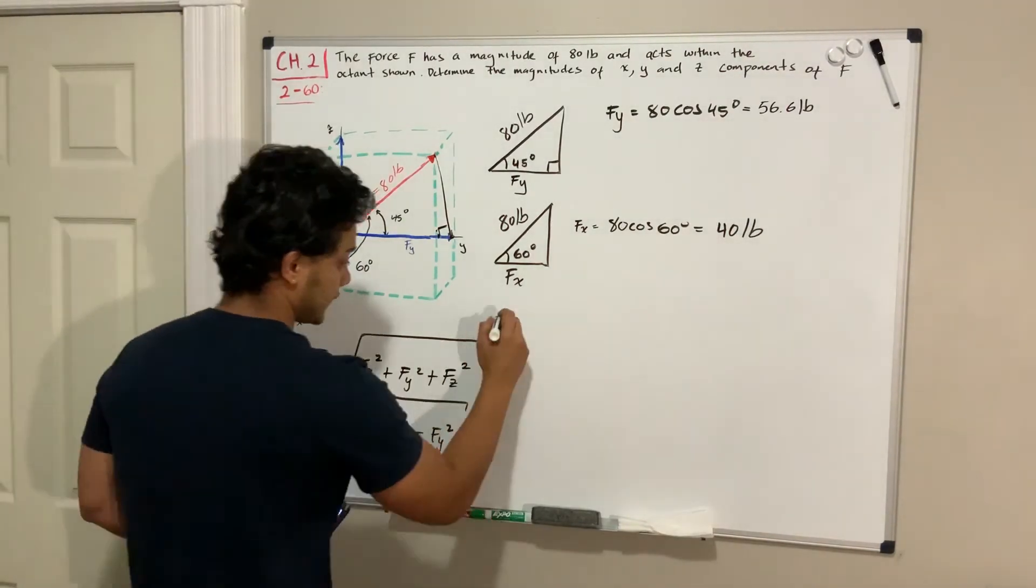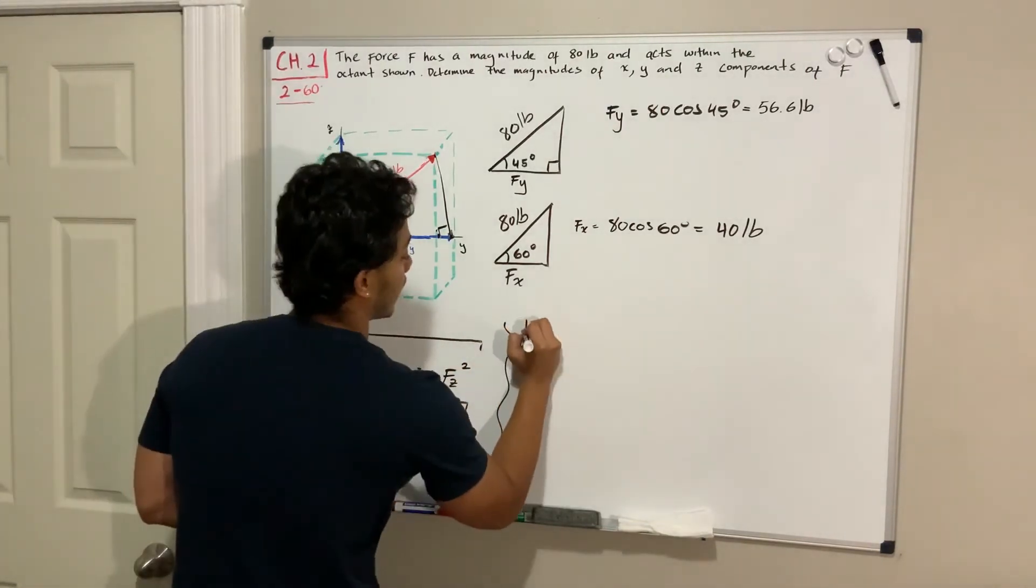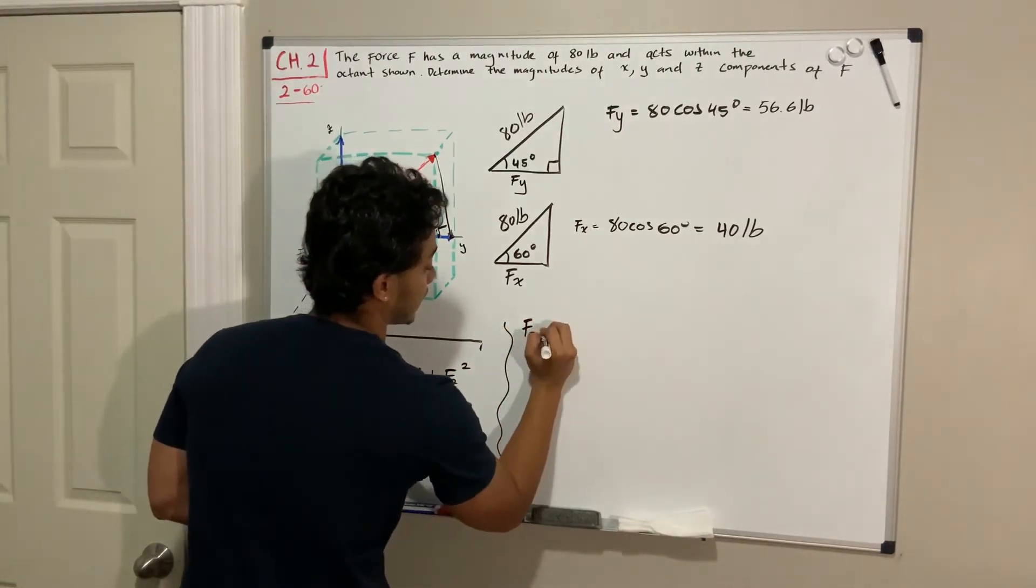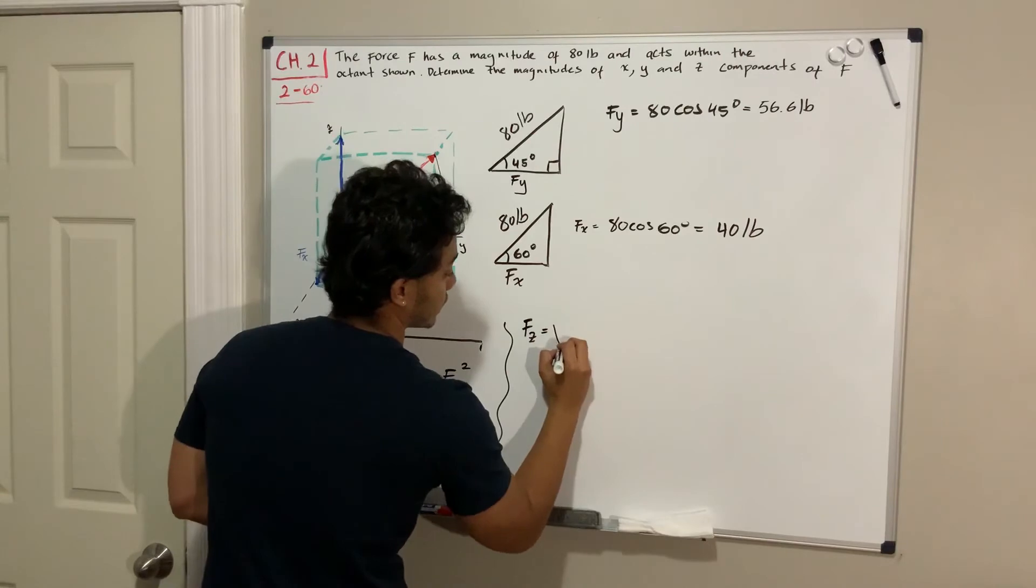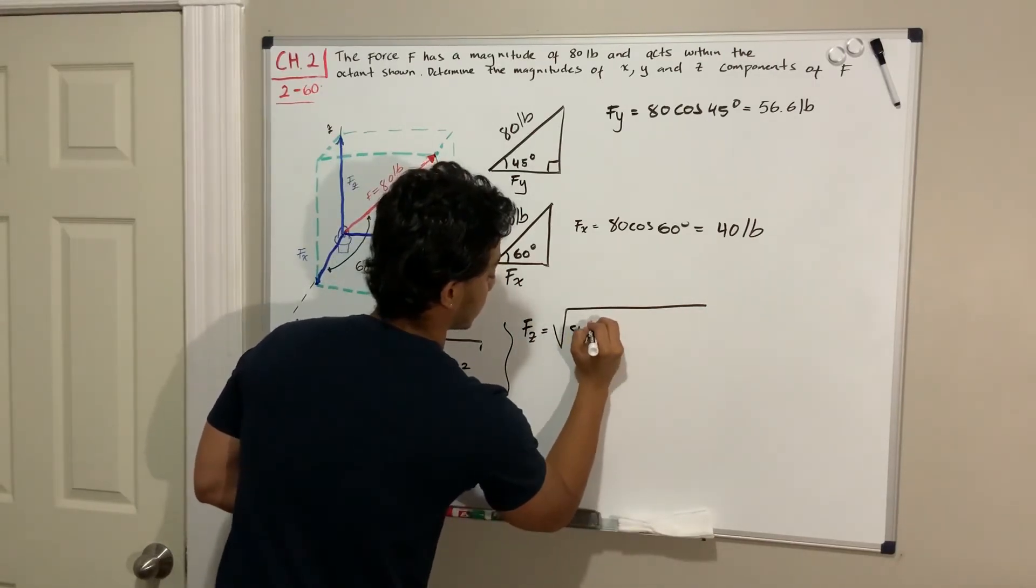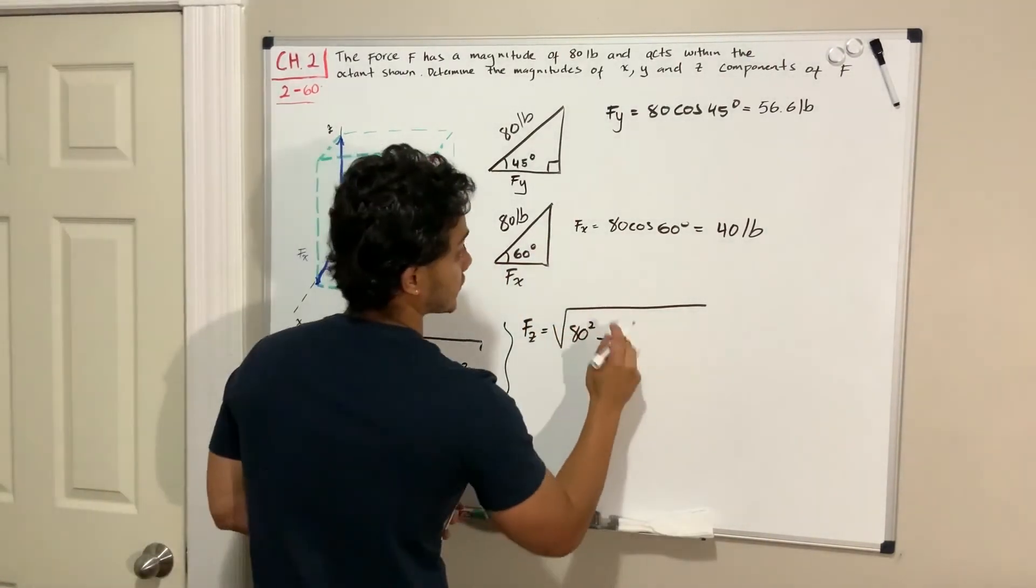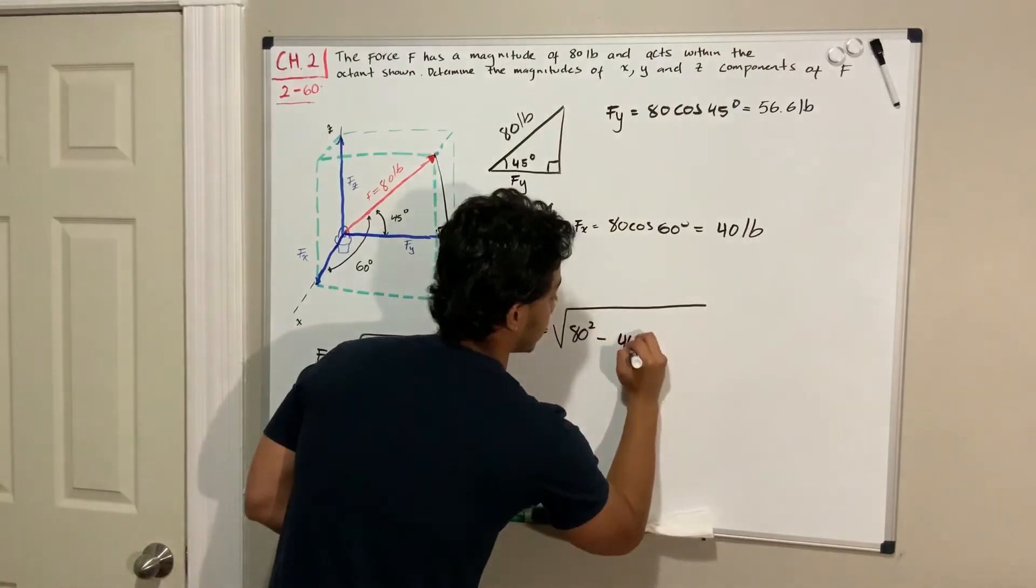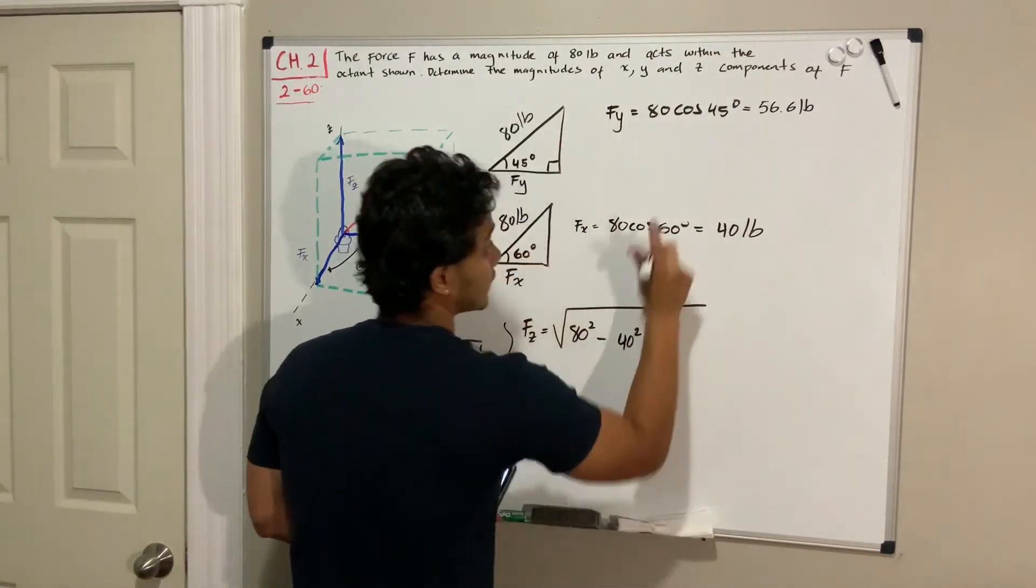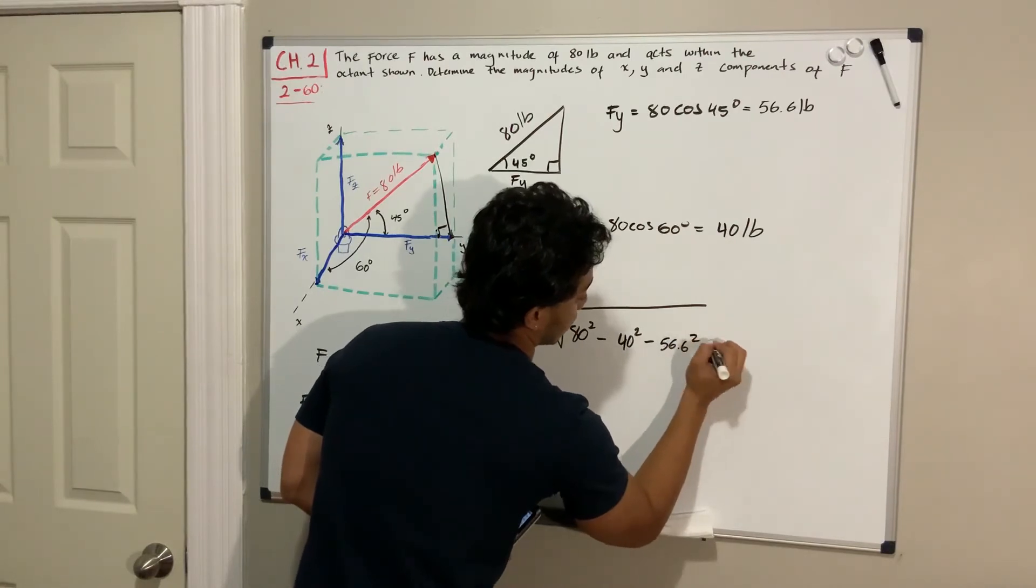So if we follow this, I'm going to do it on this side, we get that F of Z is going to be equal to the square root of 80 squared minus F of X squared, which is 40 squared, minus 56.6 squared.